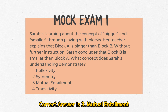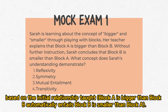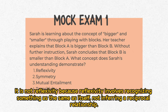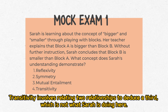Sarah's conclusion demonstrates mutual entailment because she understands the reciprocal relationship between 'bigger' and 'smaller.' Based on the initial relationship taught — block A is bigger than block B — it automatically entails that block B is smaller than block A. It is not reflexivity, because reflexivity involves recognizing something as the same as itself, not inferring a reciprocal relationship. It is not symmetry, as symmetry involves reversing relationships while maintaining their structure. Transitivity involves relating two relationships to deduce a third, which is not what Sarah is doing here.